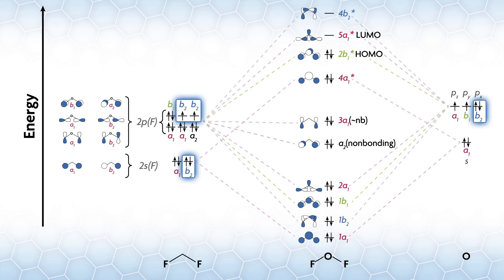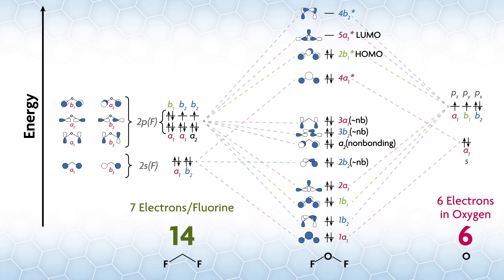That gives us the full MO picture. All that's left is to add the correct number of valence electrons. The fluorines have seven electrons each, and oxygen has six, so a total of 20 electrons in our valence MO picture.